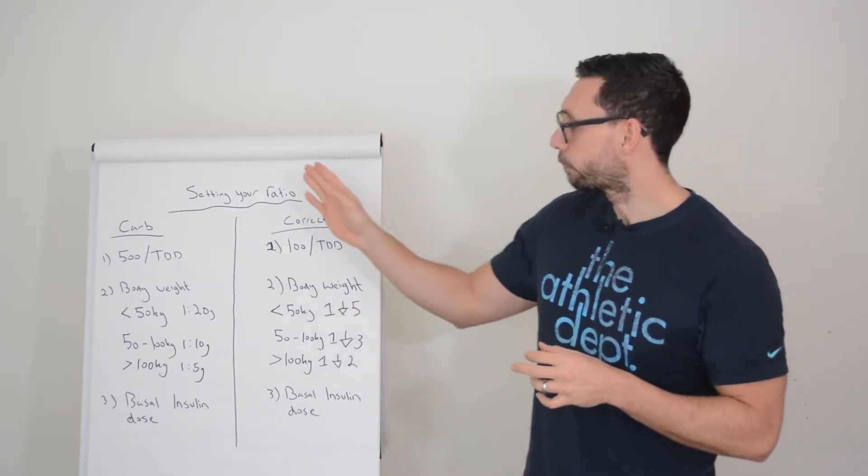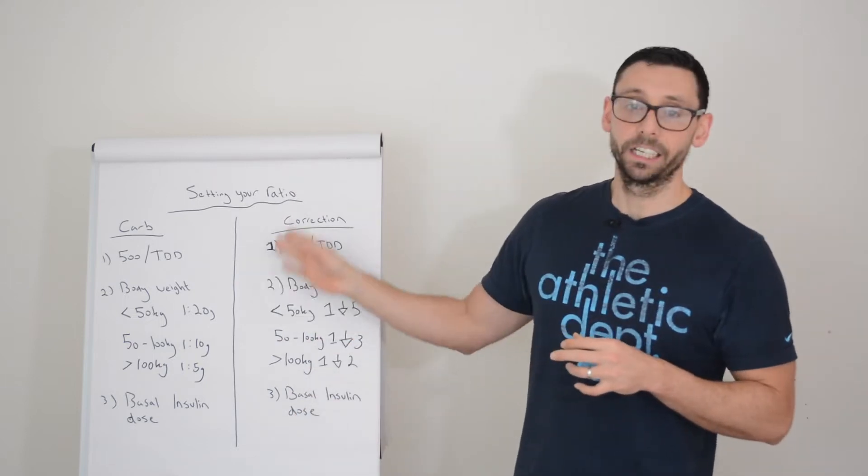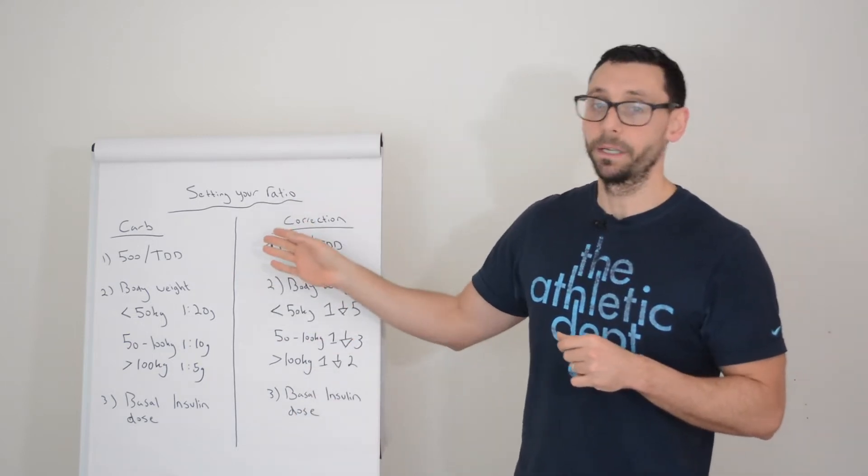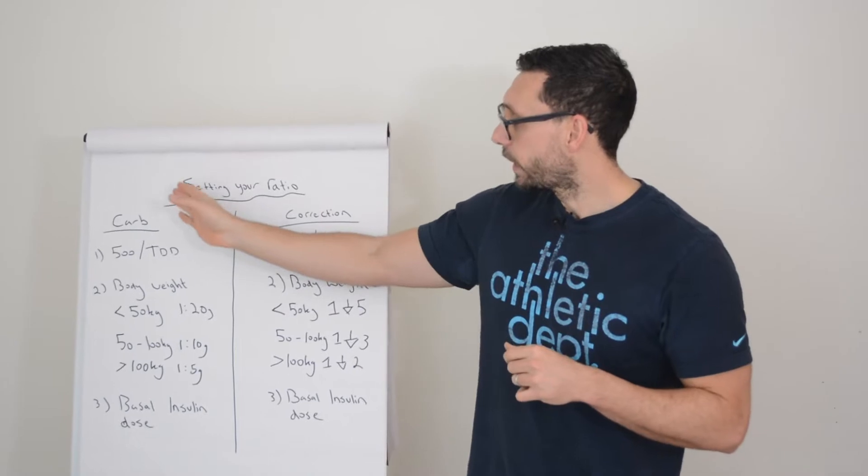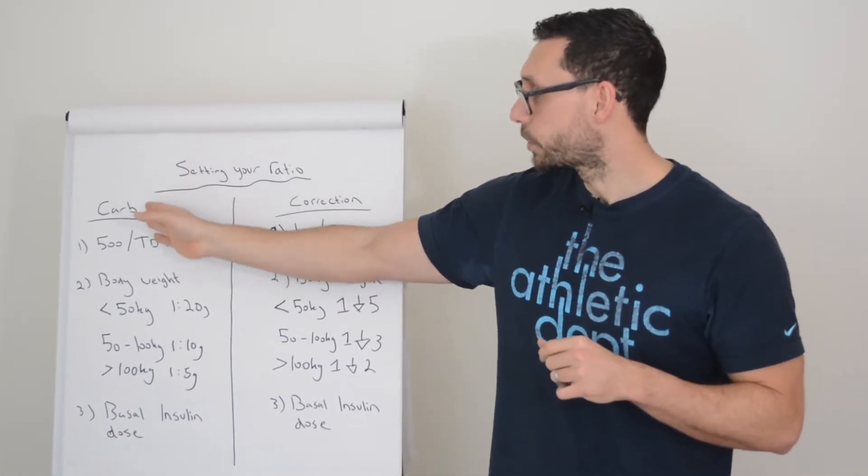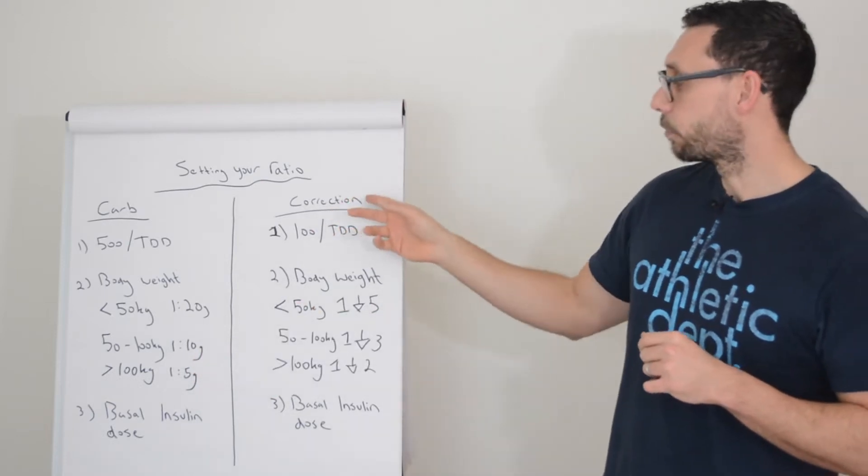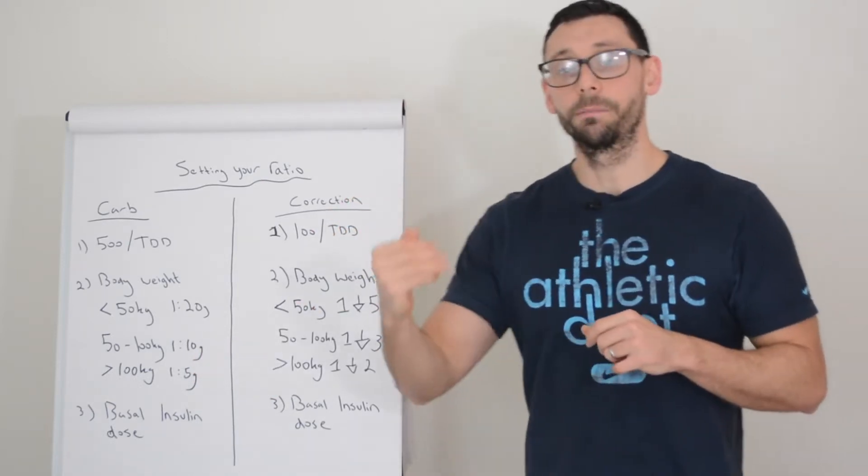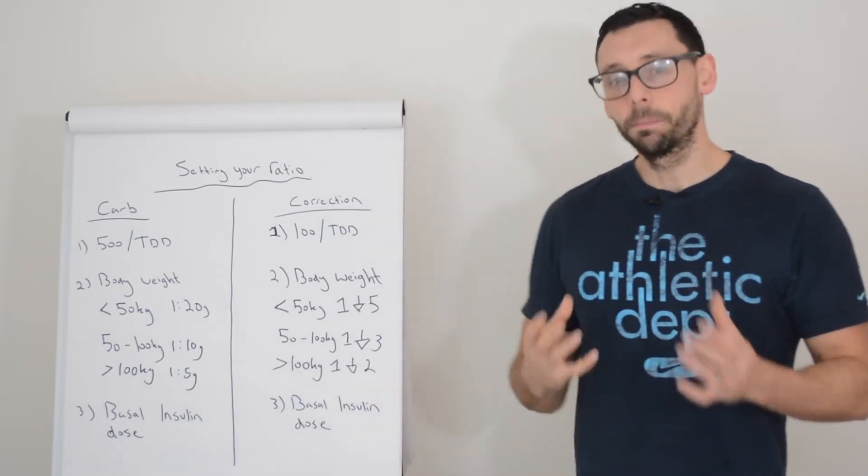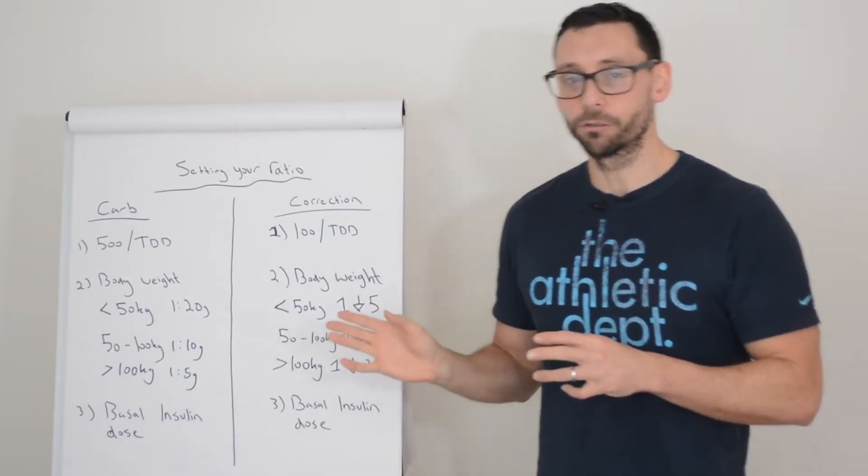So as you can see on the board here, we have a few different methods that we've written out. We'll zoom in to make it a bit clearer. On the left we have your carb ratio and the three different methods we can use to calculate it. And on the right we have your correction ratio and the three methods we can use to calculate it. They're pretty similar, but we'll start with the carbohydrate ratios.